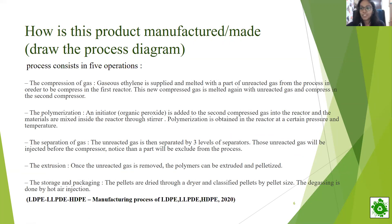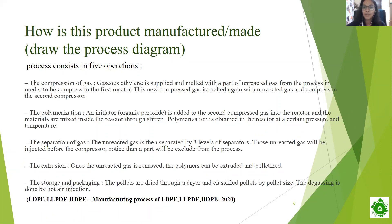Polymerization is obtained in a reactor at a certain pressure and temperature. In the extrusion stage, once the unreacted gas is removed, the polymer can be extruded and pelletized. I would now like to hand over the presentation to Amal.